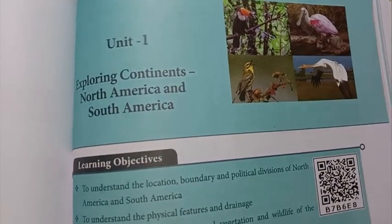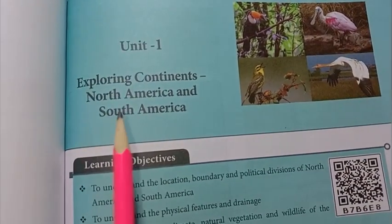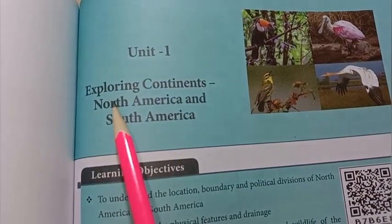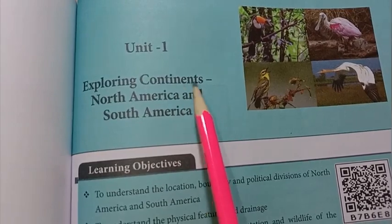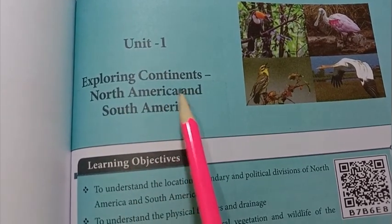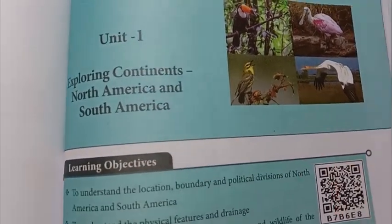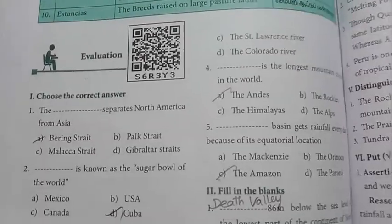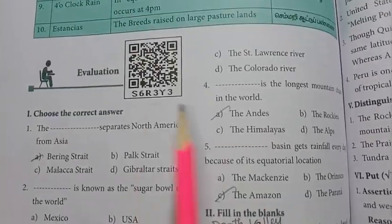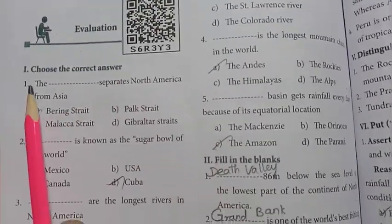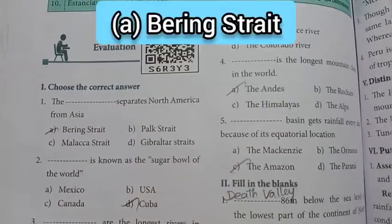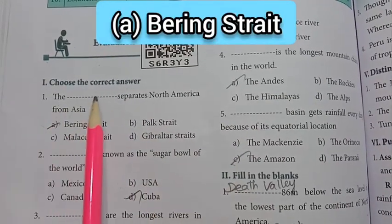In this video, we look at 7th standard Social Science, Term 3, Unit 1: Exploring Continents — North America and South America. We will go through the book back exercise. Turn to page 162.